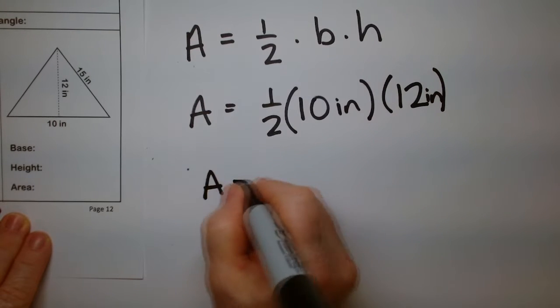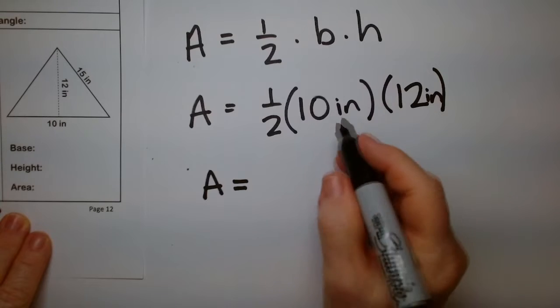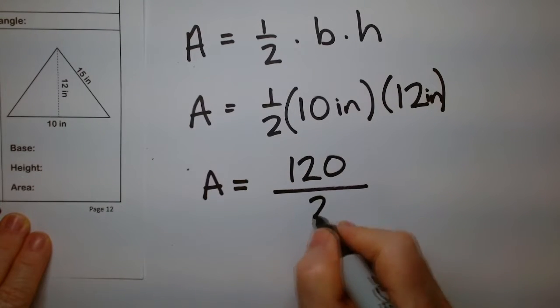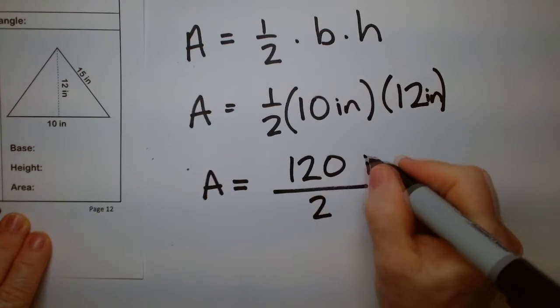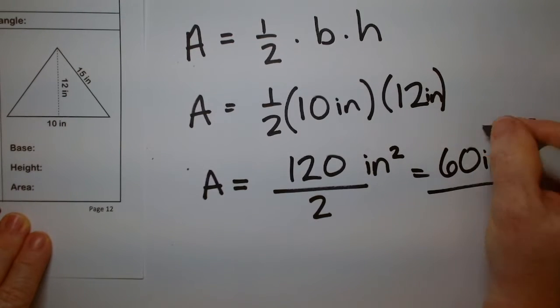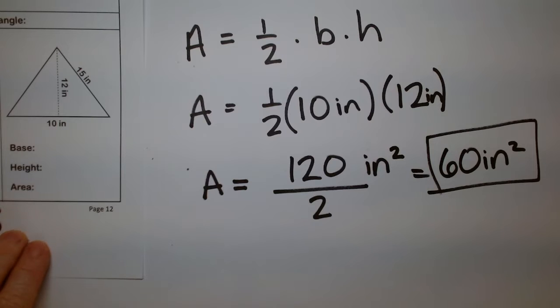So area is 10 times 12 is 120 over, there's our 2 here, and this is square inches or inches squared. 2 into 12 is 6, so my answer is 60 square inches. And that's the area of my triangle.